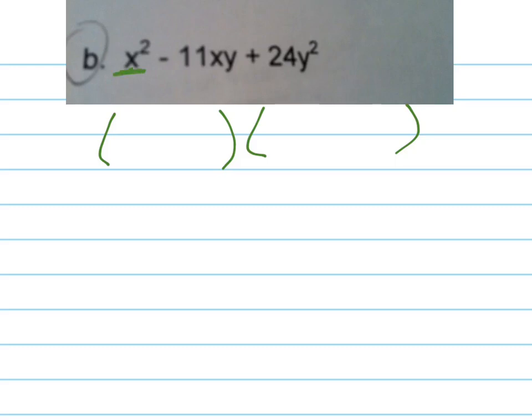This is going to be your first term, so that's got to go here and here — that's the only way that could be broken up. This one here is your last term, so it's going to go here and here, and this one in the middle is your inside plus your outside added together. It's your O plus your I added together, so I'm going to guess and check.